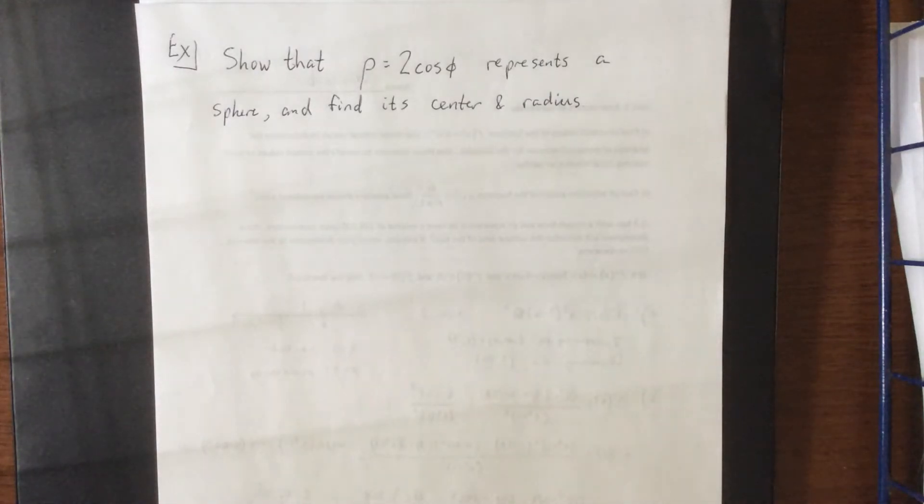In this example, we are going to show that the spherical equation rho equals 2 times the cosine of phi represents a sphere.